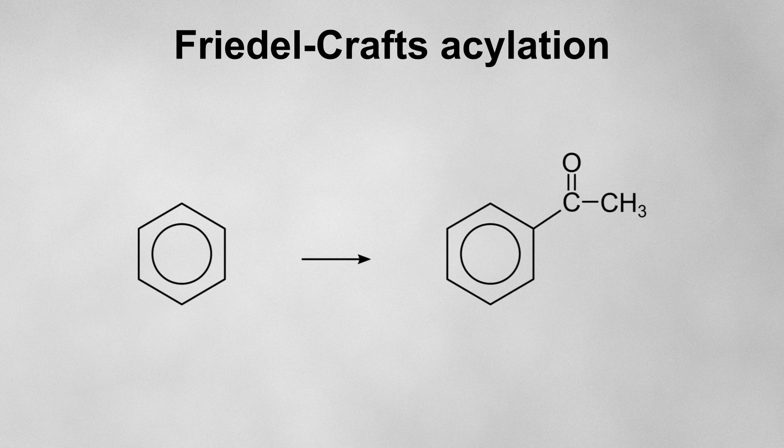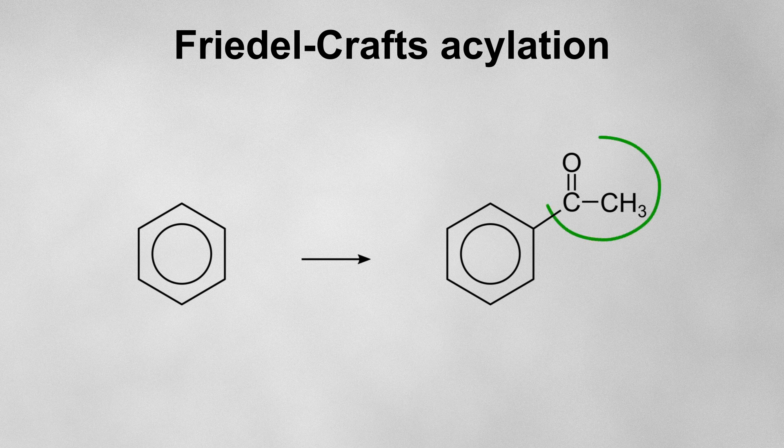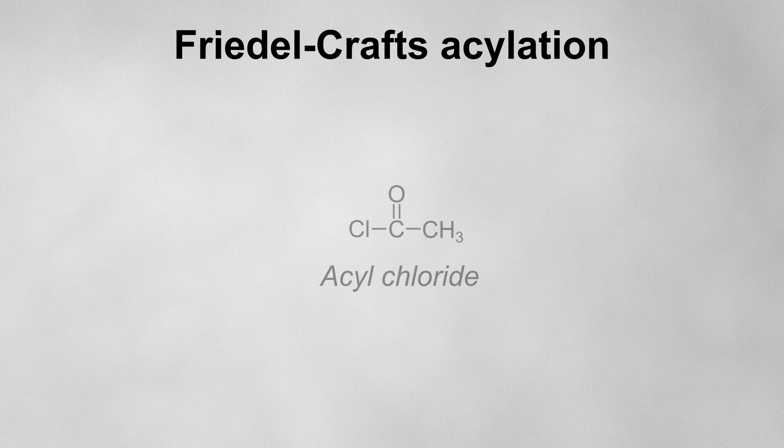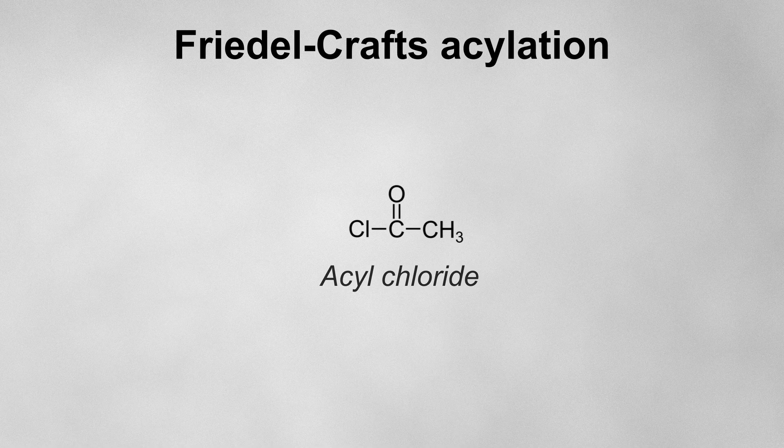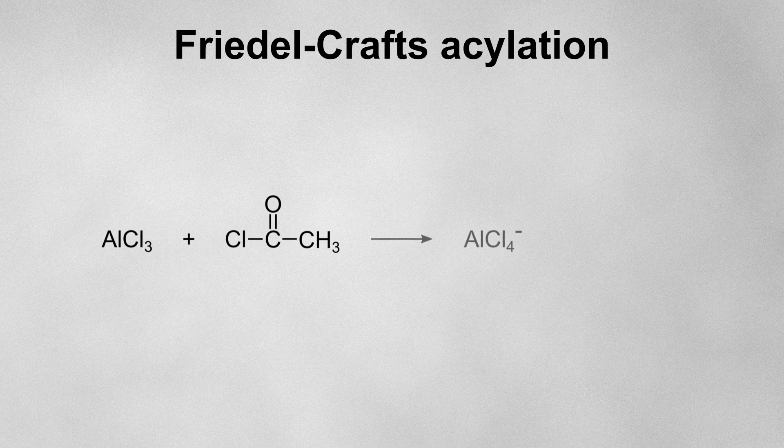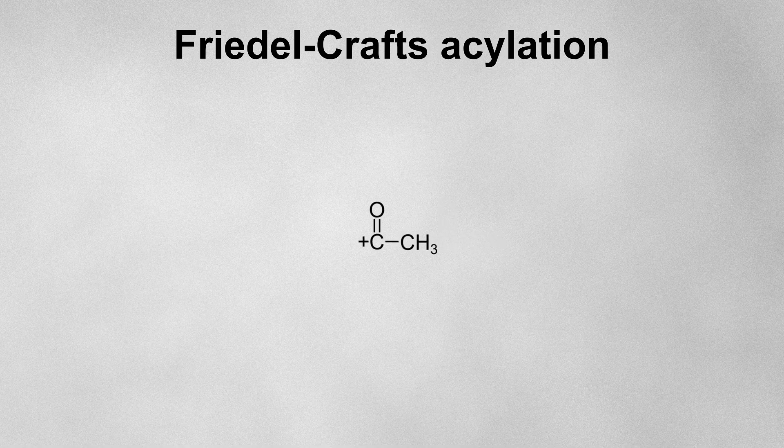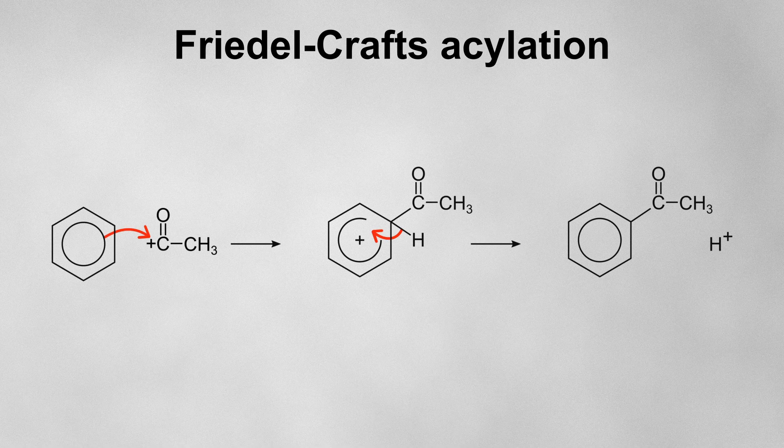We can do the same thing in a Friedel-Crafts acylation. In this case, we're going to be substituting an acyl group onto the benzene. So the reagent we'll be using is an acyl chloride. Once again, in order to generate the electrophile, we'll react it with a halogen carrier which takes a halide ion for itself and leaves this positively charged electrophile, which is now electrophilic enough to initiate an electrophilic substitution.